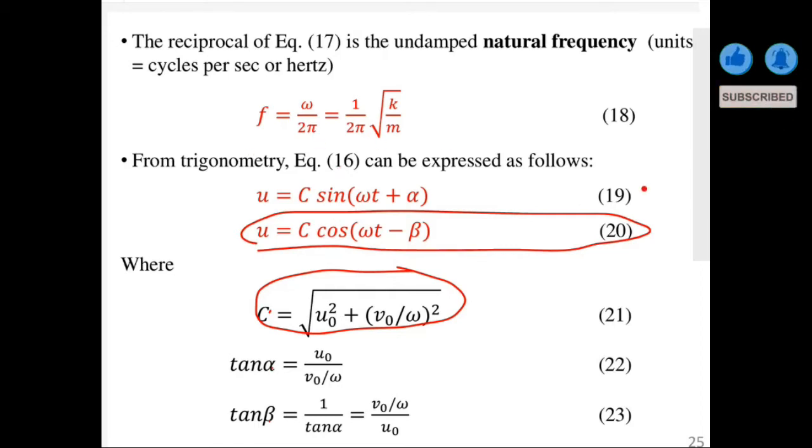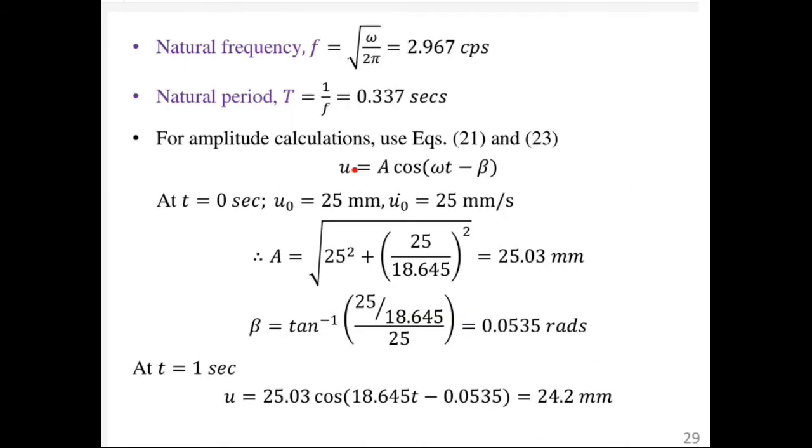Equation 16 - the solution can be expressed in compact form as shown. At t equals 0, the initial displacement is 25 millimeters and the velocity is 25 millimeters per second. Using our equation, the amplitude can be given by that expression here, and the phase angle is as shown.